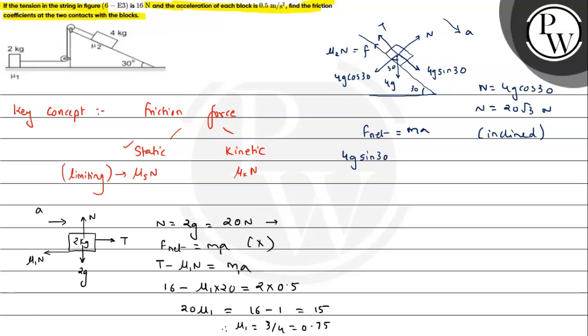So here we can write 4g sin 30, minus T, minus μ2 N, will be equals to mass into acceleration. We can call this m2 mass.